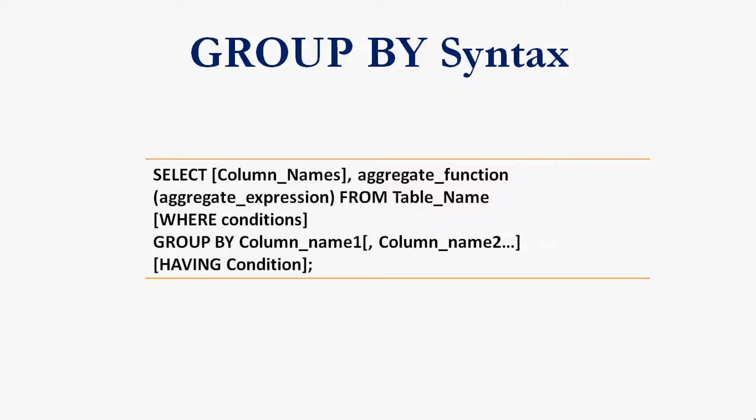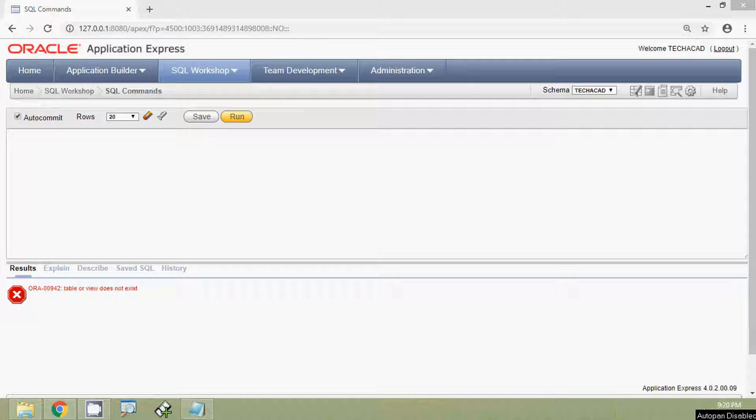Welcome to Oracle tutorials. In this video we are going to discuss the GROUP BY clause. The GROUP BY clause is used to group the results of a SELECT query based on one or more columns. The syntax is: SELECT column names, then aggregate function, FROM table name, then optional conditions, then GROUP BY column name, and optionally more columns and a HAVING condition.